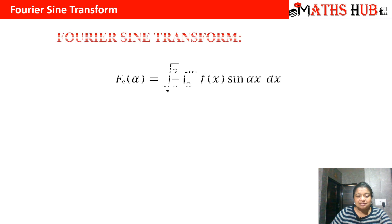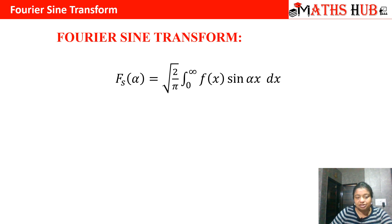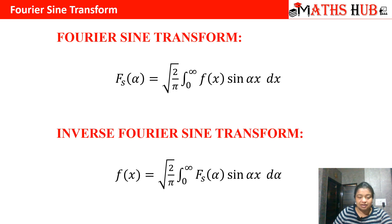To start with, let us check out the formulations to calculate the Fourier sine transform and the inverse Fourier sine transform. To calculate the Fourier sine transform we apply: √(2/π) × ∫₀^∞ f(x) sin(αx) dx. To calculate the inverse Fourier sine transform we apply: √(2/π) × ∫₀^∞ Fs(α) sin(αx) dα.